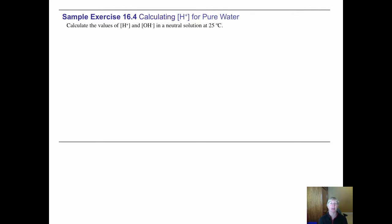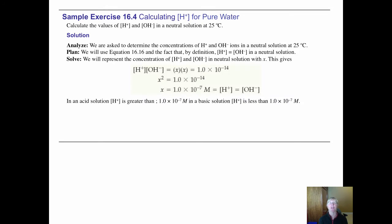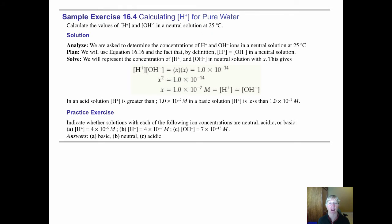Sample exercise 16.4 says that if you have pure water, your concentrations of hydroxide and hydrogen, also called hydronium, should be equal to each other. You'll let those concentrations equal X, and therefore X squared should equal 1 times 10 to the negative 14th. When you solve for X, you can find that in pure water, which is neutral, the hydrogen ion concentration, also called hydronium, is 1 times 10 to the minus 7th molar, and so is the hydroxide ion concentration.